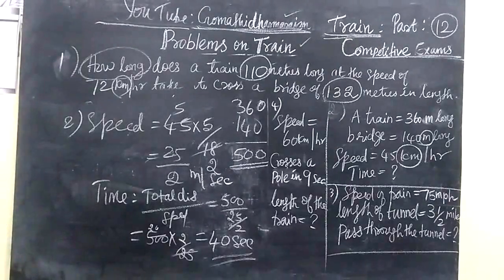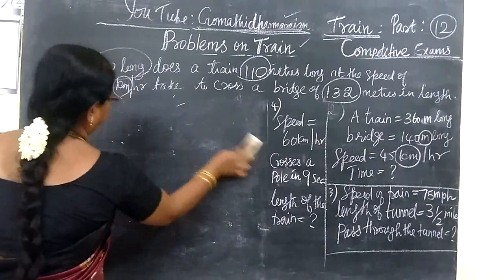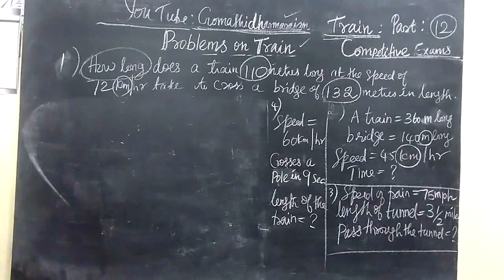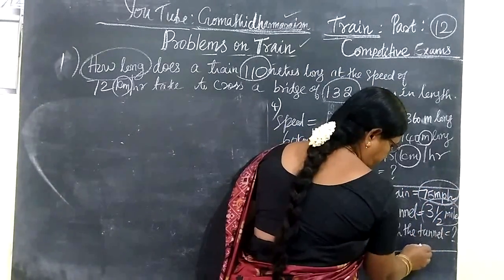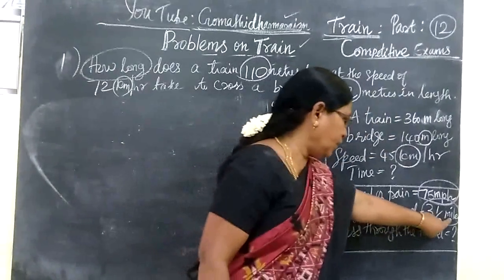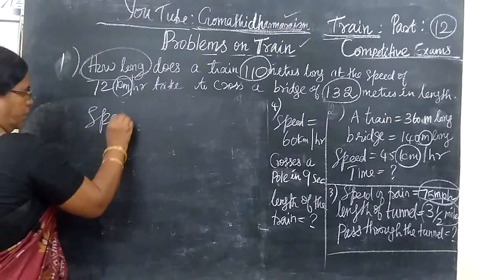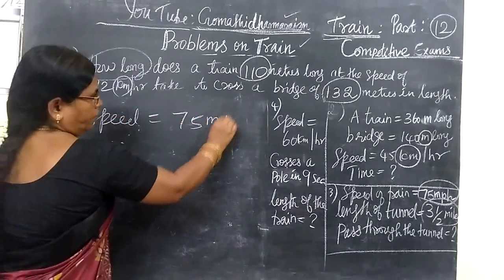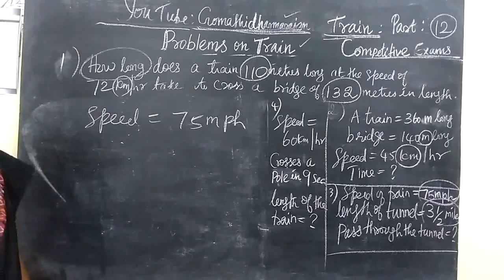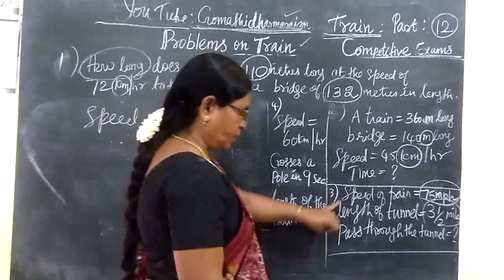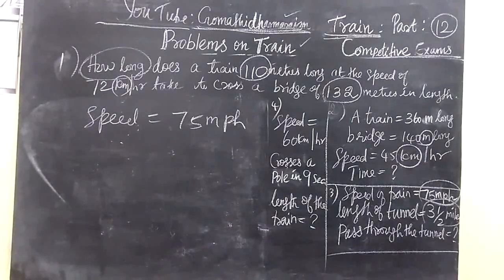Now we see the third problem. Speed of the train is equal to 75 miles per hour. In miles per hour. Here in miles. Speed will be no need to change. Speed equals 75. Here it is given miles per hour. And here you are given length of the tunnel. The tunnel will be crossed. Speed of the train. For the third problem, you want to write the speed of the train also.